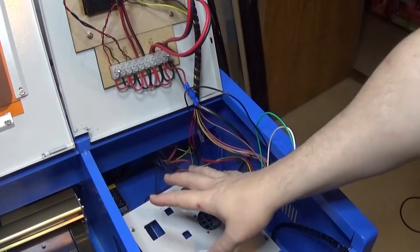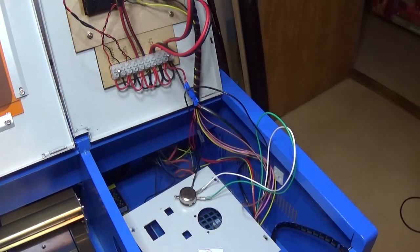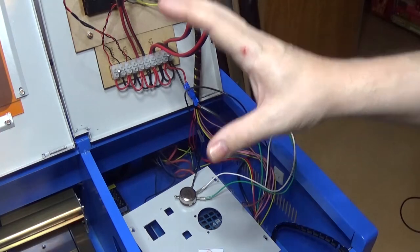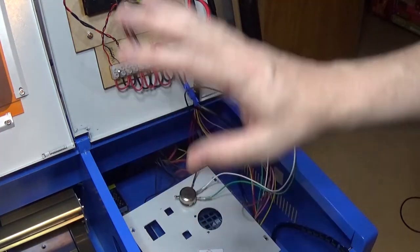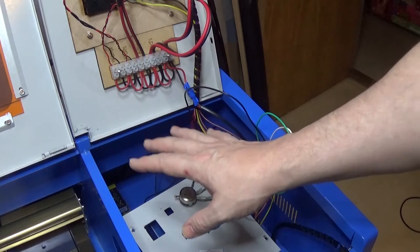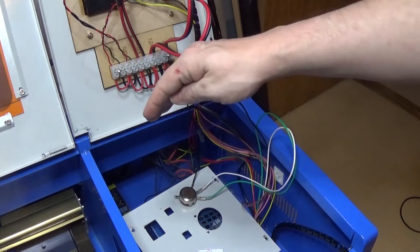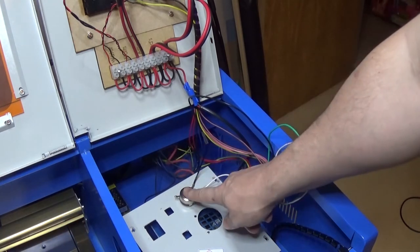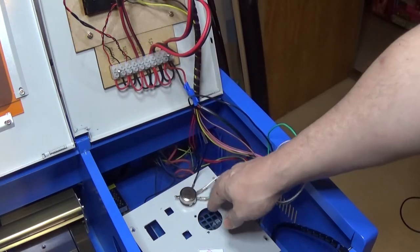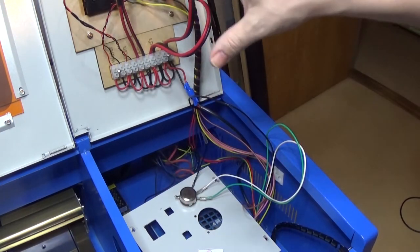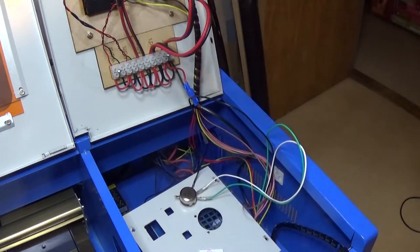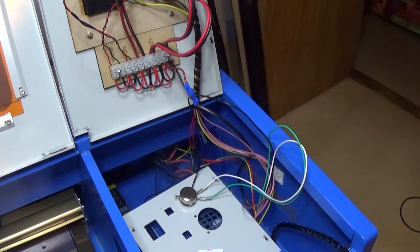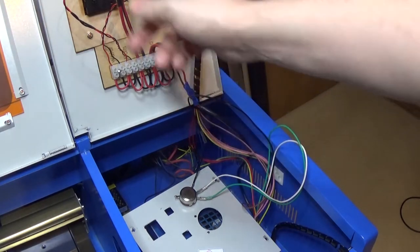First things first, let's get the potentiometer wired in so we can get the voltmeter wired in too because they both coexist. Please make sure that if you're following this step by step exactly, then you need to check that we've got the same power supplies. Otherwise you'll have to do your own research on which wires go where.